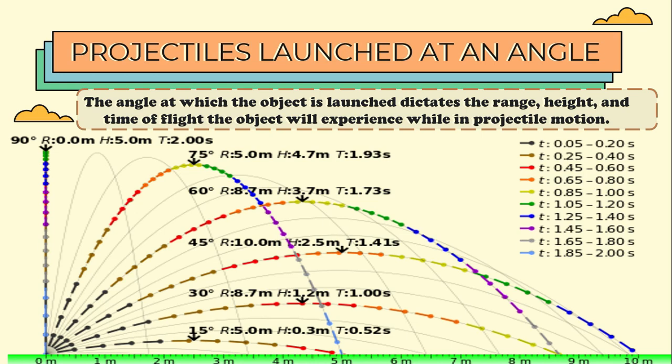If an object was projected at 45 degrees, the range will reach up to 10 meters, with a height of 2.5 meters, at the time of flight of 1.41 seconds. If we increase it into 60 degrees, the range would come up into 8.7 meters, at the height or maximum height of 3.7 meters, at the time of flight of 1.73 seconds.